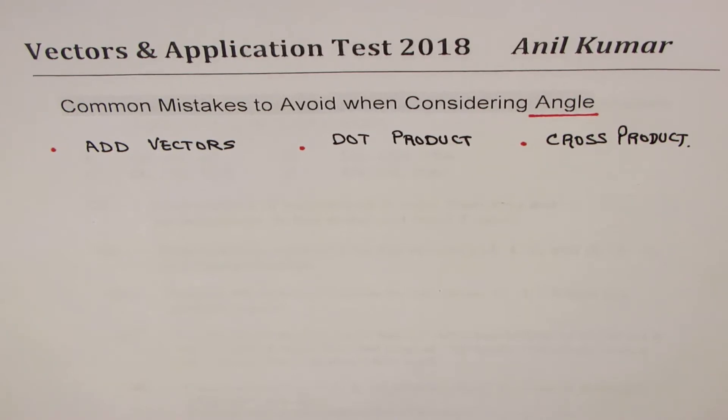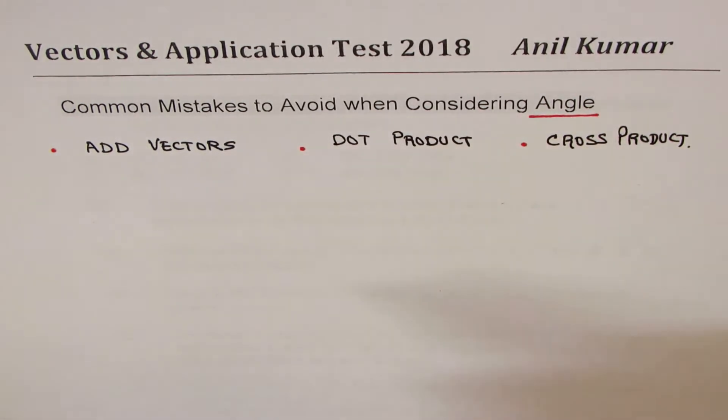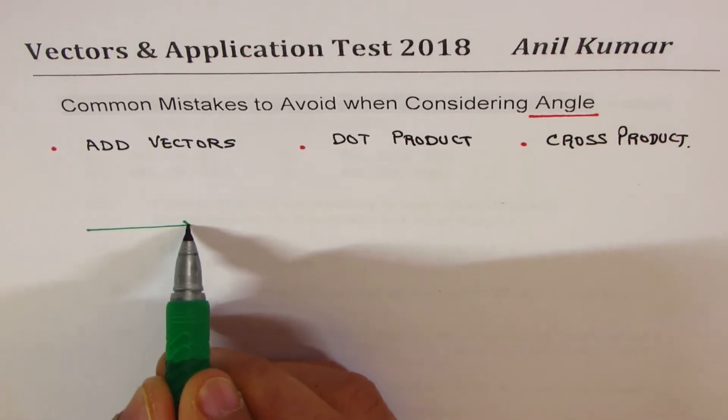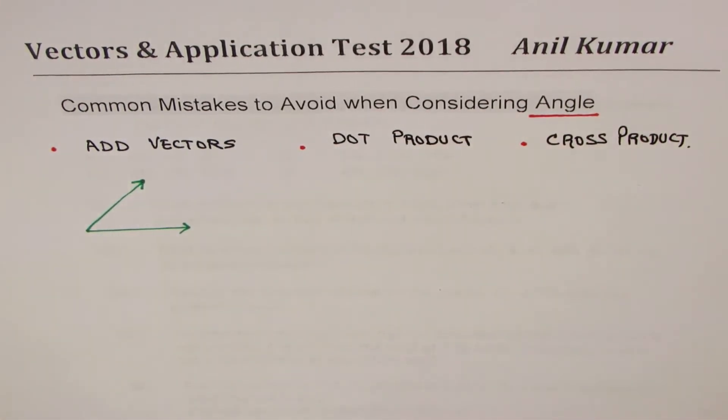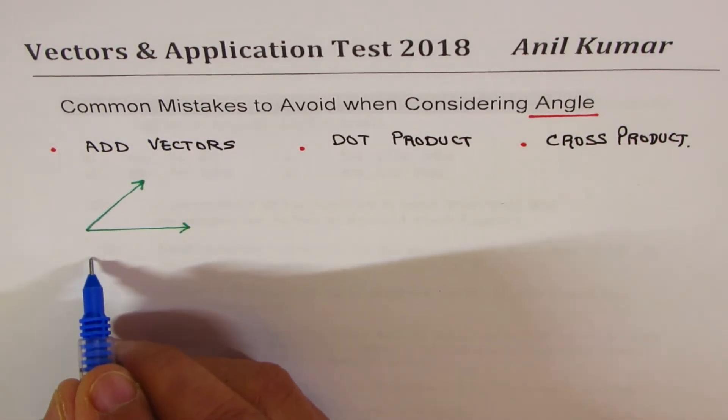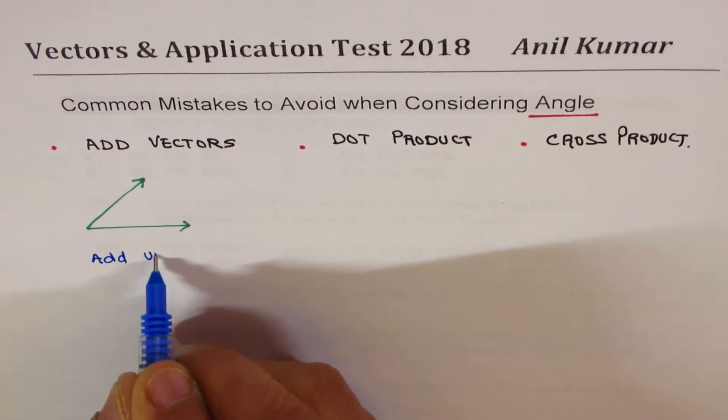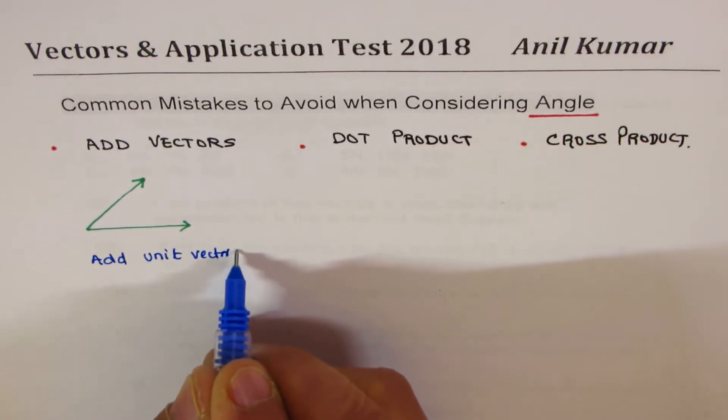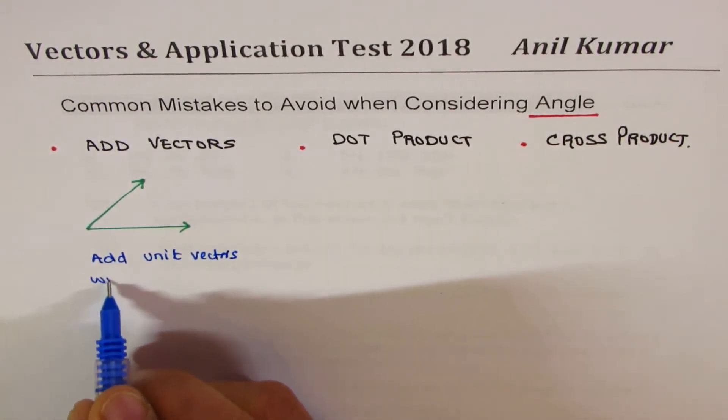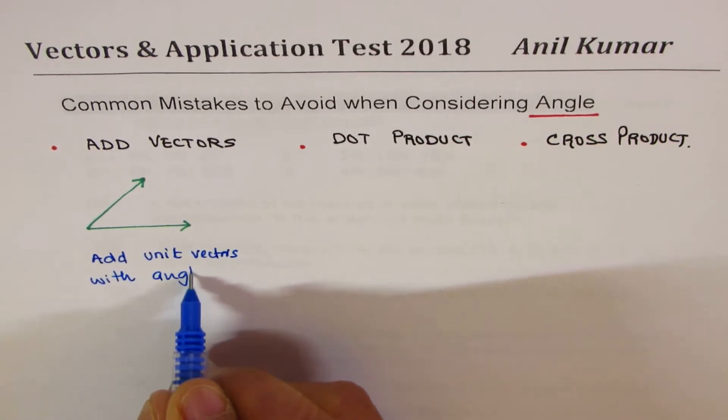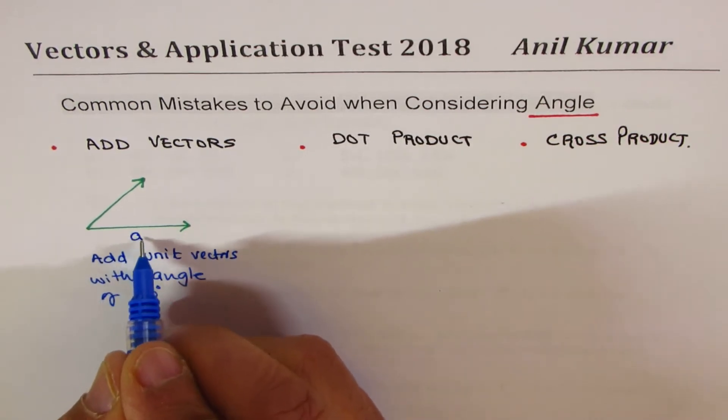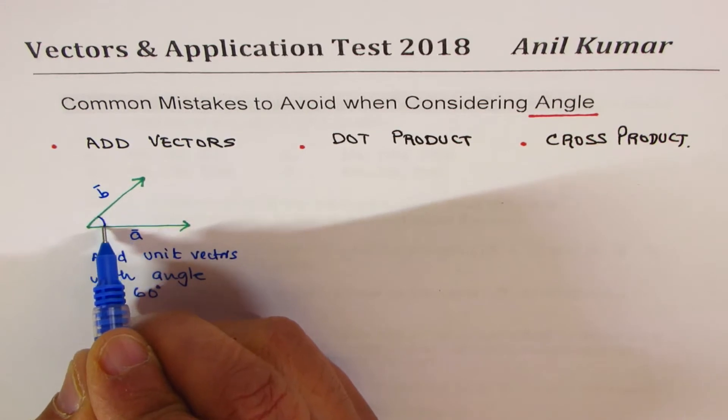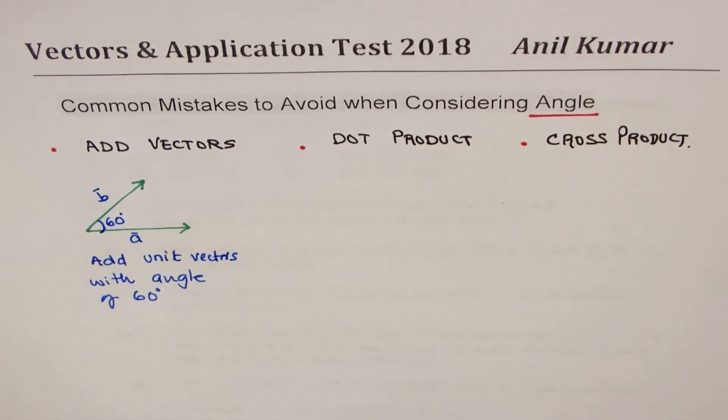So when you are adding vectors, normally in the test, you will say, let's say we are given two vectors here. One vector is kind of like this. The other one is kind of like this. We are going to keep things very simple. Okay, so we say we have unit vectors. So the question is add unit vectors with angle of 60 degrees. So these are unit vectors, let's say a and b and the angle between them here is 60 degrees.